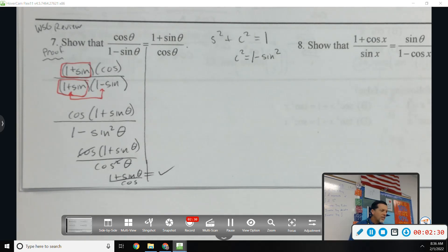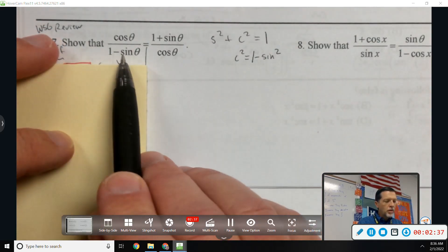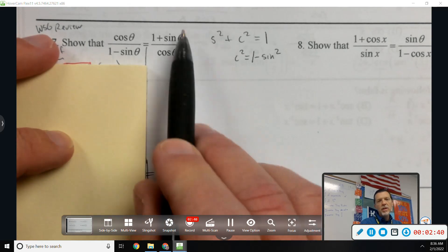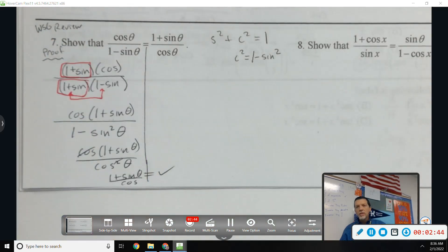You might can see that if you work the other side, you'd multiply top and bottom by one minus sin, and something really similar would happen, and you'd be left with one minus sin in the bottom and cosine in the top. So that one is about the same, whichever side you work on. Number eight is pretty much the same thing as well.